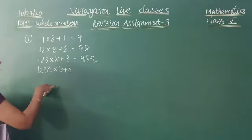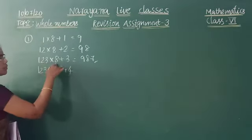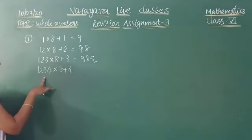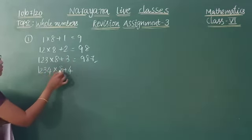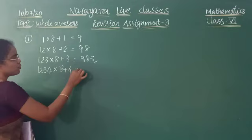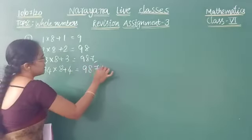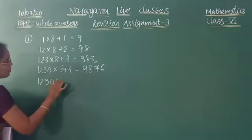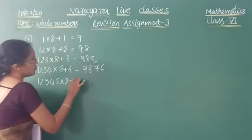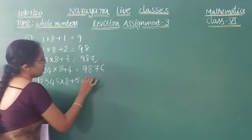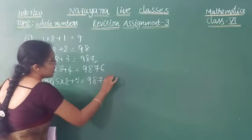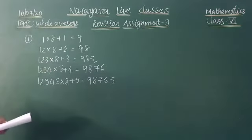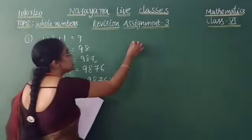The next 2 steps they are asking. So 123 × 8 + 3 = 987. The next 2 steps are: 1234 × 8 + 4 = 9876, and 12345 × 8 + 5 = 98765. If you multiply and add, you have to get this answer only.